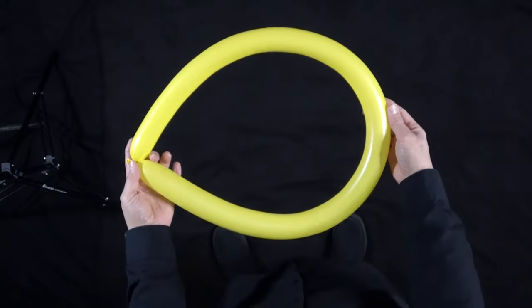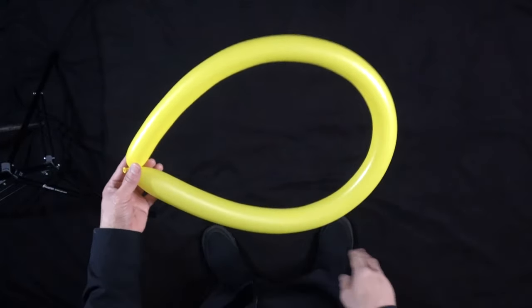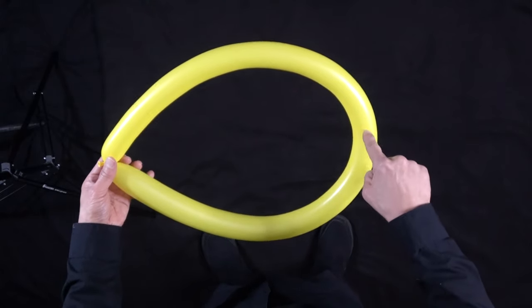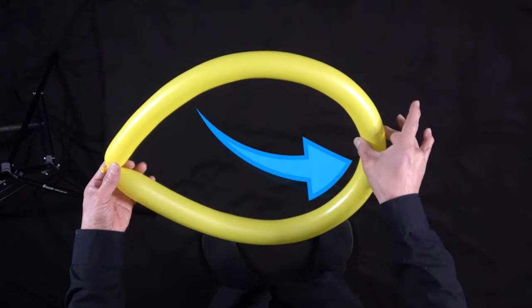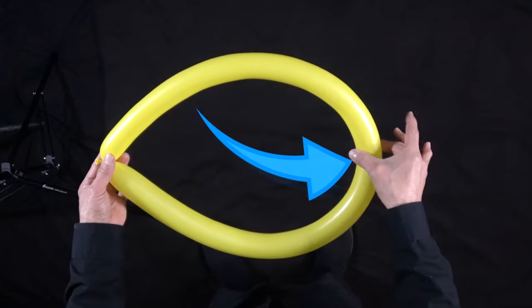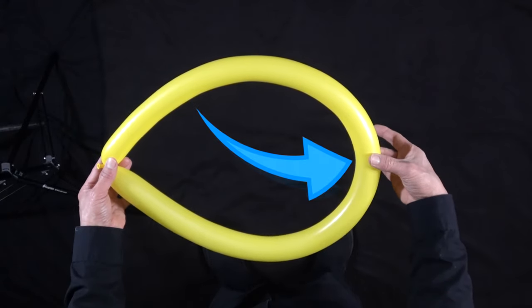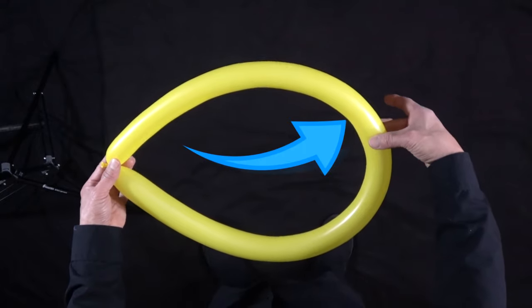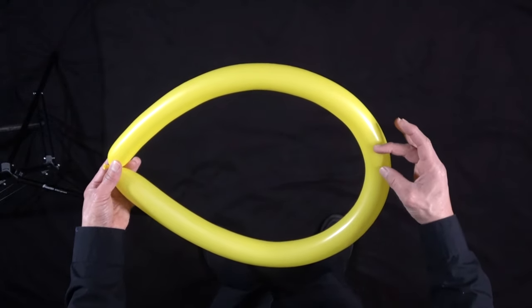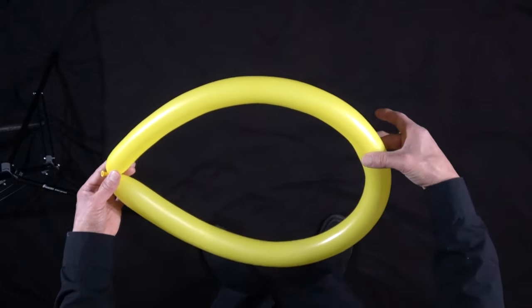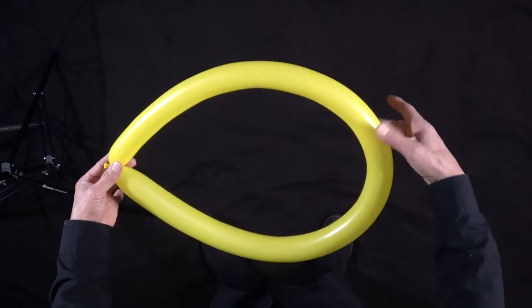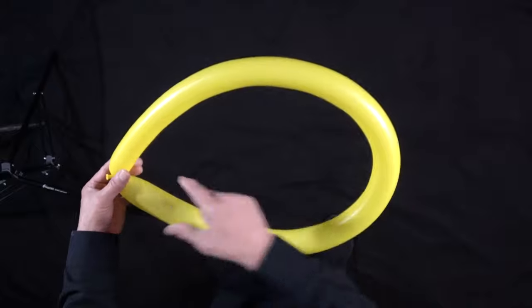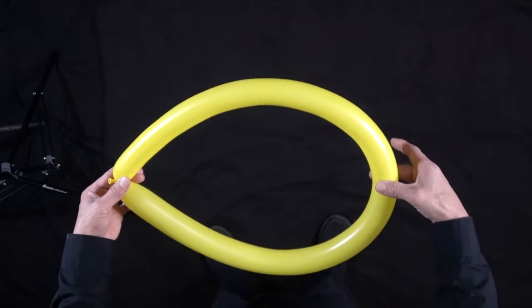A loop. Got a loop. Now what you want to do is find the opposite end, the midpoint of the loop. Once you find that, we're not actually going to use the midpoint. We're going to move and shift over just a little bit, maybe about an inch off-center. You want to work from off-center. You're going to twist this into here. Let's do that.